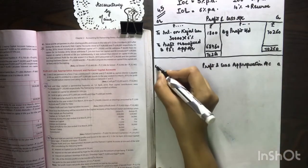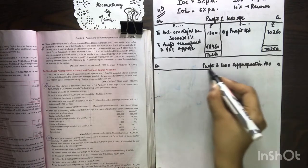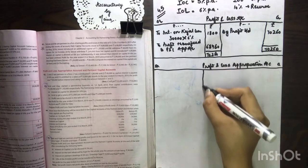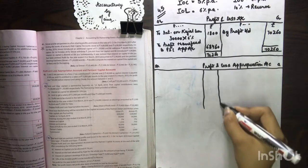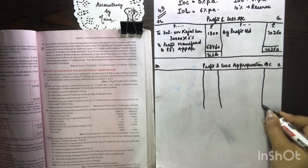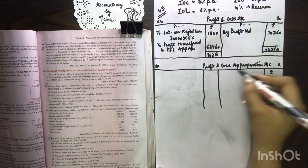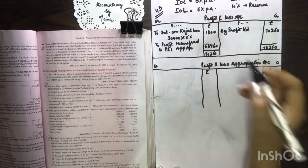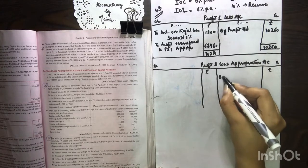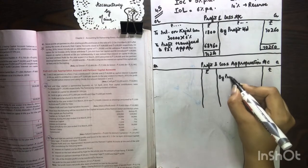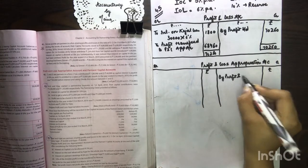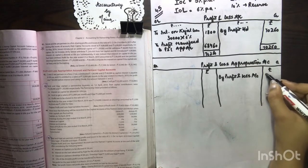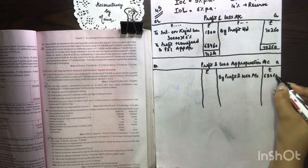Credit, debit — you have to follow the proper format. Here, particulars, rupees, particulars, rupees. So we have the Profit and Loss account — by Profit and Loss account — that is 68,460.